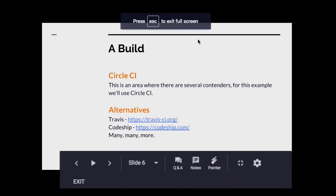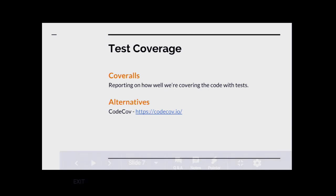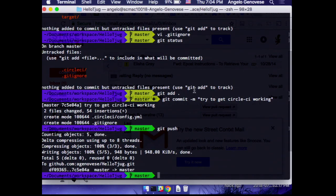So we've got a build. What else do we want? One thing we might want is to be able to talk about how much of the code is being tested. All the caveats apply — code coverage doesn't necessarily equate to test quality — but it can be an interesting metric to keep track of. It's free, so let's try it out. We're going to try Coveralls.